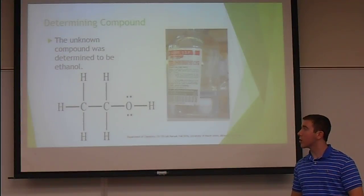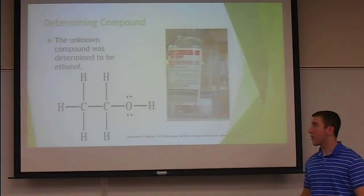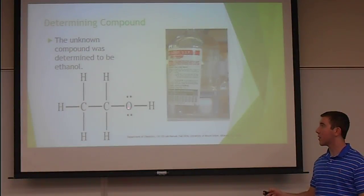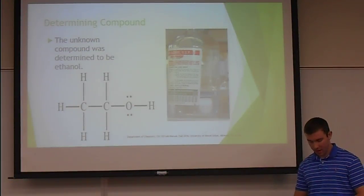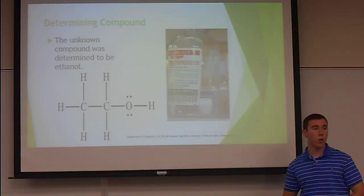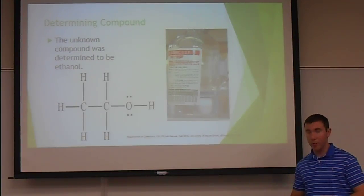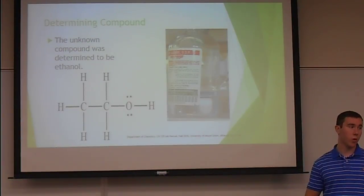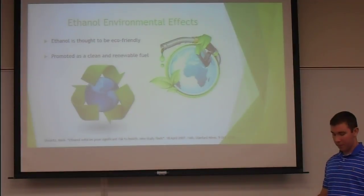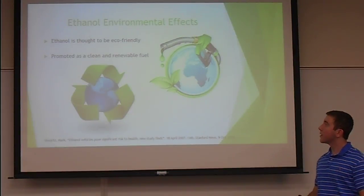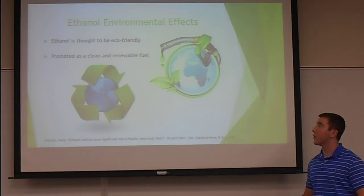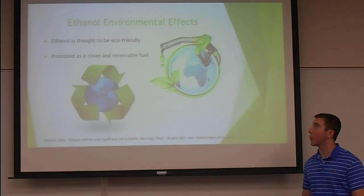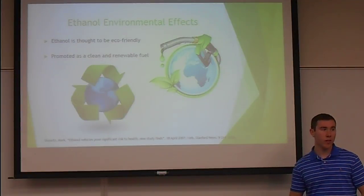This is the Lewis structure of ethanol. You can also see the functional groups here — an OH and a CH singly bonded carbon. According to the Chemistry 120 lab manual, the more complex the molecule, the more vibrations and hydrogen atoms it will have, and more absorption peaks will be found. Ethanol is thought to be very eco-friendly and, according to an article by Mark Schwartz, is promoted as a clean and renewable fuel.